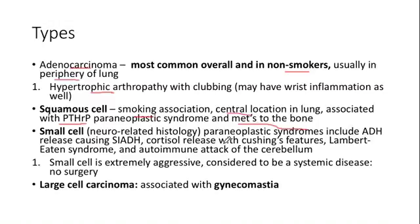Small cell has most of the paraneoplastic syndromes. Since it's a neuroendocrine histology, the paraneoplastic syndromes have neuro-related consequences like autoimmune attack of the cerebellum. SIADH — ADH comes from the brain — and Cushing syndrome via ectopic ACTH also fit this pattern. Lambert-Eaton syndrome, where muscle weakness improves with increased activity, is another association — if you see a Lambert-Eaton vignette, consider ordering a chest CT to evaluate for lung cancer.